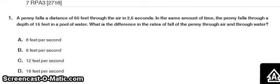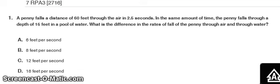Let's take a look at our practice probe for the 7 RPA3 standard. Question one: a penny falls a distance of 60 feet through the air in two and a half seconds. In the same amount of time, the penny falls through a depth of 16 feet in a pool of water. What is the difference in the rates of the fall of the penny through the air and through the water?